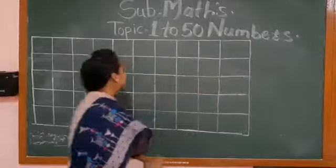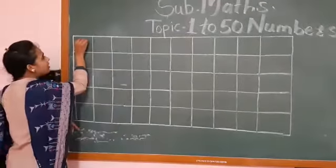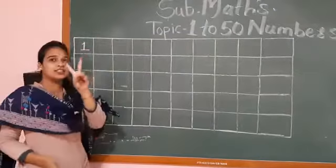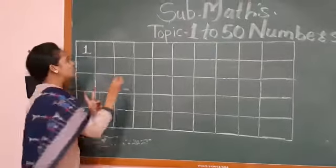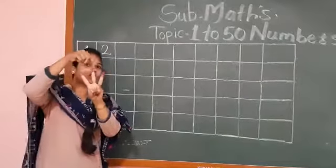Let's start. How many? One. What will we write here? One. This? One, two. This? One, two, three.